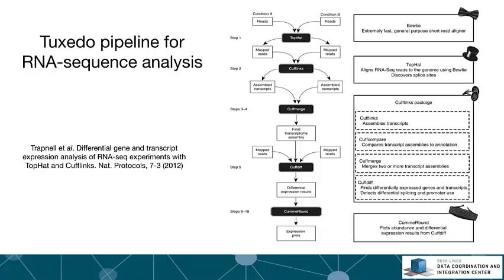A real-life example of a computational pipeline in biology is the Tuxedo pipeline. The goal of this pipeline is to take raw reads in the form of RNA sequences from two different conditions and then calculate what genes are differentially expressed. The whole computation is broken down into a sequence of steps, each performed by a specific program: the TopHat program, the CuffLinks program, the CuffMerge program, the CuffDiff program, and the CummeRbund program.